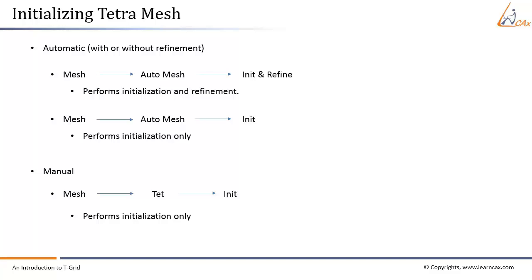To perform initialization only automatically, go to Mesh, select Auto Mesh, ensure Tetra is selected under Volume Fill, click the Set button to open the Tetra panel, and under Initialization, click Init. For the manual option, go to Mesh, then select Tetra so that the TET panel will open, and under Initialization, click Init. This option performs initialization only.